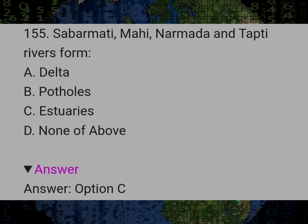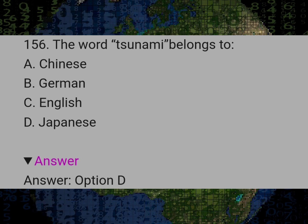Sabarmati, Mahi, Narmada and Tapti rivers form? Answer C: Estuaries. The word tsunami belongs to? Answer D: Japanese.